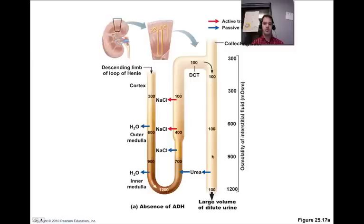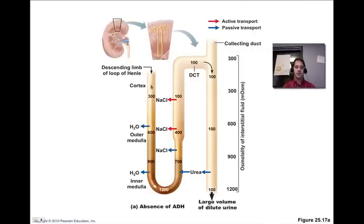Water is reabsorbed in the descending limb, so osmolality increases. Then as we go up the ascending limb, salts are actively pumped out, so osmolality decreases. If nothing else happens, we just produce a large amount of dilute urine.